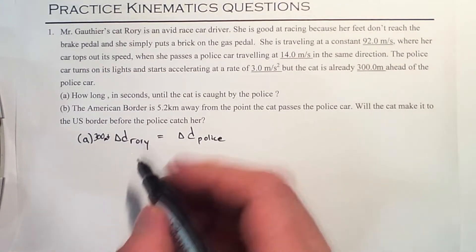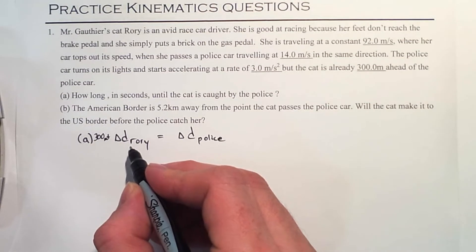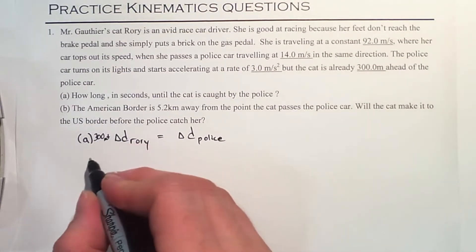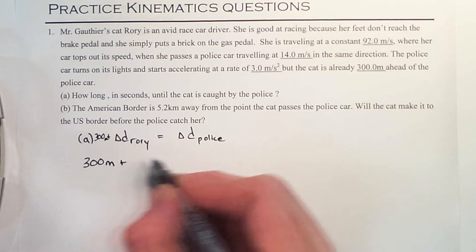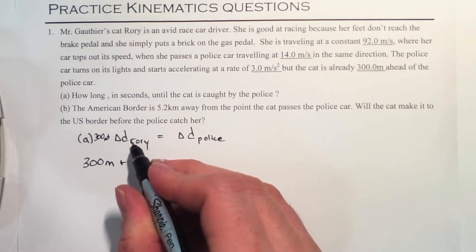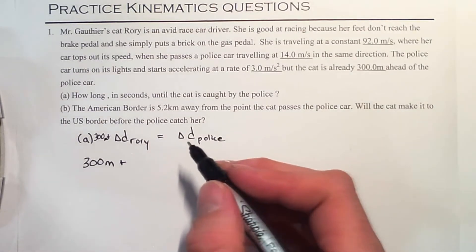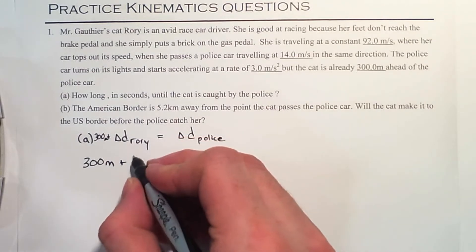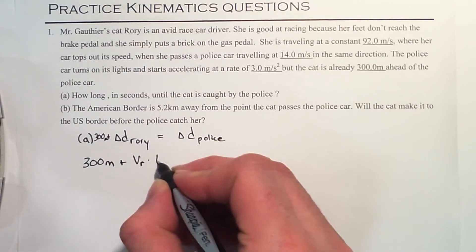Now Rory is traveling at a constant speed. And when we have constant speed, we have uniform motion. So I'm going to write 300 meters plus, well, we're not going to write distance now. We're going to write what distance is equal to, or velocity times time. So the velocity of Rory times time.